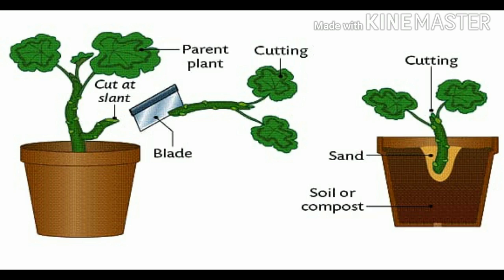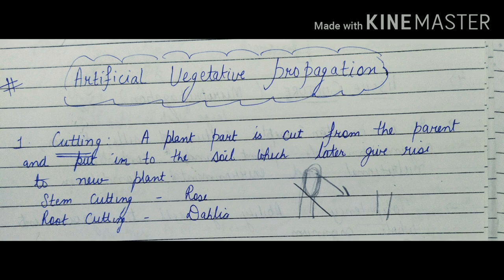Specifically, a stem or a leaf is cut and then planted in the soil. These cuttings are sometimes treated with hormones to induce root development. The development of the rose plant, for example, is achieved through stem cutting.